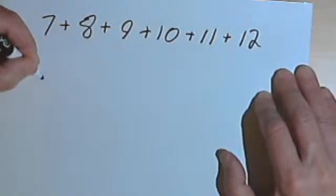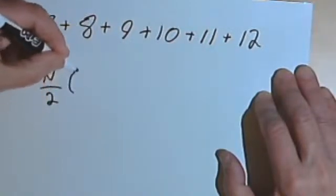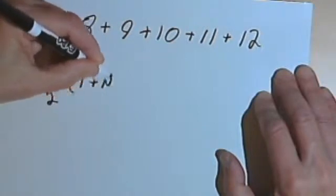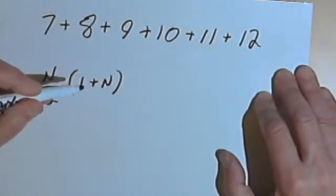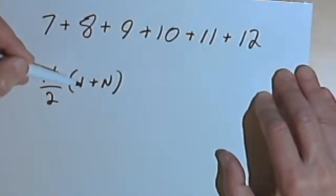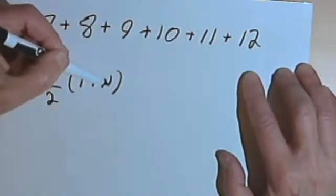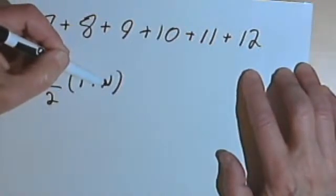So doing this before, I had this general formula, n over 2, times 1 plus n. And so 1 plus n, that's the next thing we have to change. 1 plus n was used because the first term was 1. Remember, in all the other examples, I was starting with 1 and going up, just counting upwards to however many terms there were, n terms.